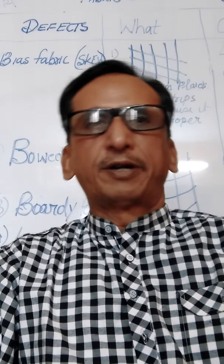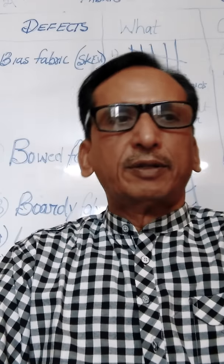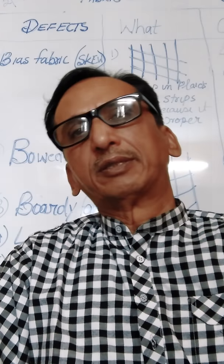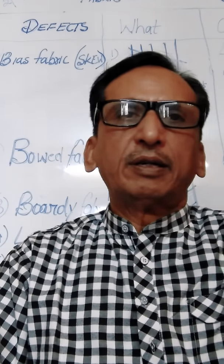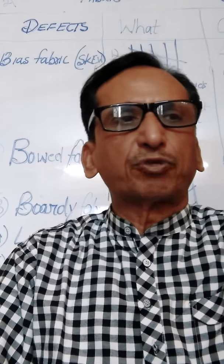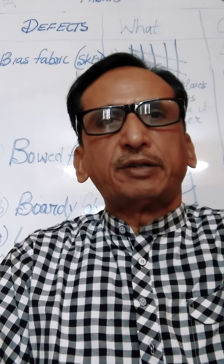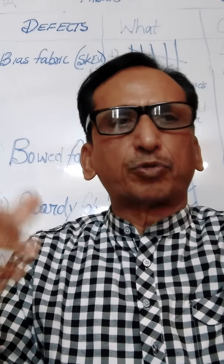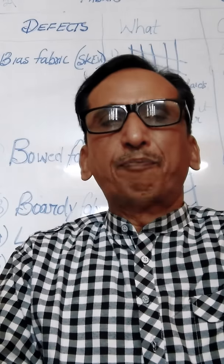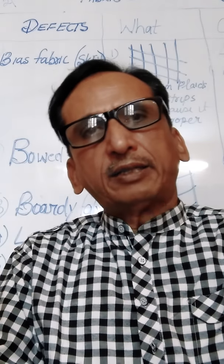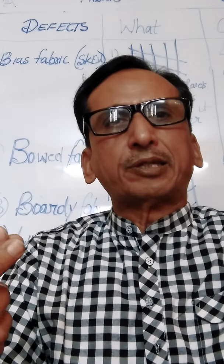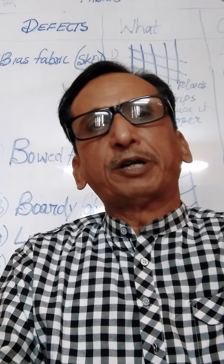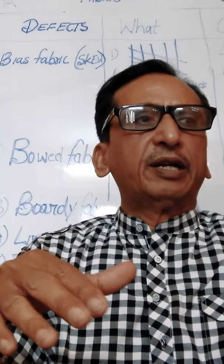Hi friends, myself Sunil Bhattnagar, again present before you with a video on fabric defects caused by faulty finishes. Finishing is a process and treatment given to the fabric after it has been made, knitted, or dyed. It is the final process of processing the cloth, and the purpose is to make the fabric suitable for its intended use — for example, making the fabric soft, antiseptic, crease resistant, flame proof, or water resistant, or a combination of these properties.